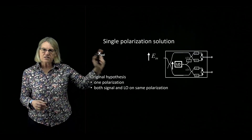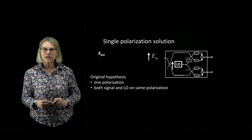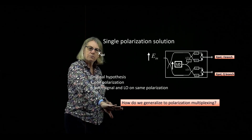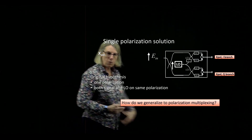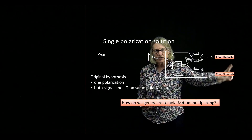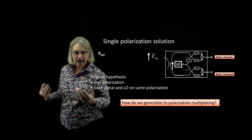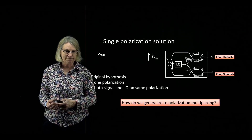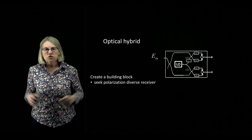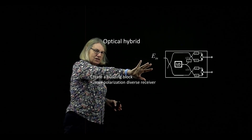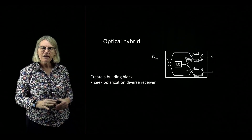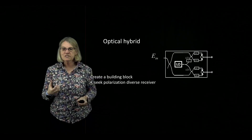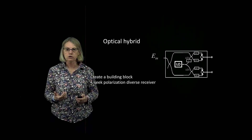Now I want to take this single polarization solution, which works very well, and ask the question: how do we generalize this to polarization multiplexing? I want to be able to create an I branch and Q branch for both the X polarization and the Y polarization, so I'll look for a building block from the single polarization solution to use as the basis for creating a polarization diverse solution.